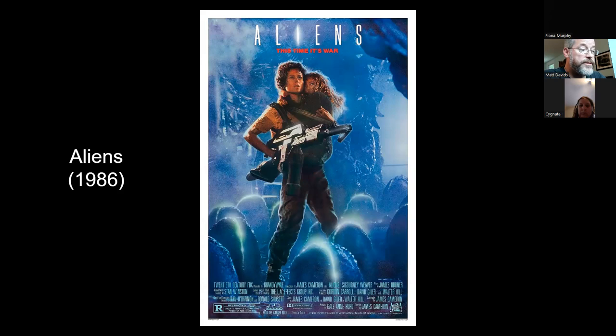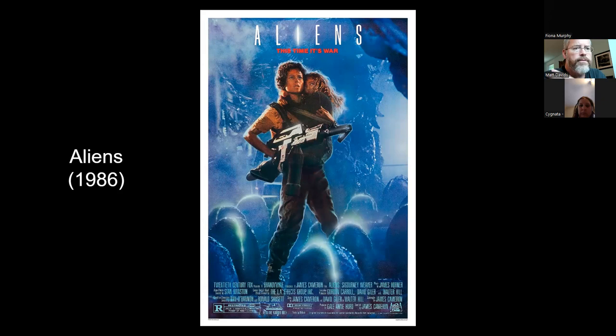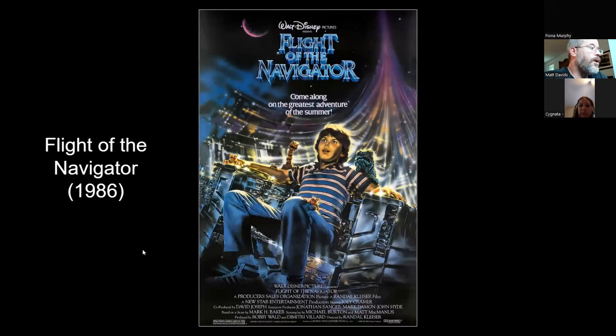Aliens, 1986 — James Cameron went from Terminator to doing the sequel to Alien. Instead of Ash, this time we get Bishop, played by Lance Henriksen, who is awesome. We get a little different take — Bishop is actually pretty cool. He helps save Ripley and Newt and sacrifices himself. So we get Bishop in that regard where he actually helps people — a kind of a good character.